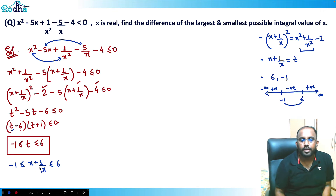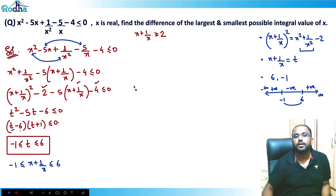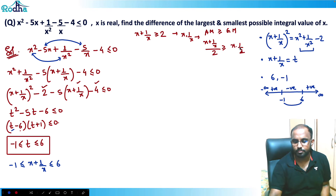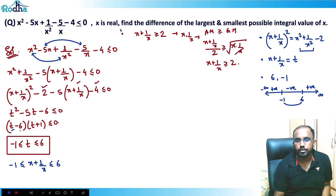Now, x + 1/x — this inequality is important. We know that x + 1/x, if x is positive, is always greater than or equal to 2. That can be proven by AM-GM: arithmetic mean of x and 1/x is always ≥ geometric mean. So (x + 1/x)/2 ≥ √(x · 1/x) = 1, which gives x + 1/x ≥ 2. So x + 1/x ≥ 2 whenever x is positive.